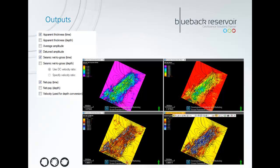When we run this process we can get a number of different outputs. We can get an apparent thickness and a detuned amplitude which will factor for the effect of tuning. We can also get a net pay, which is a measurement of thickness in a reservoir, and then our estimation of net-to-gross.